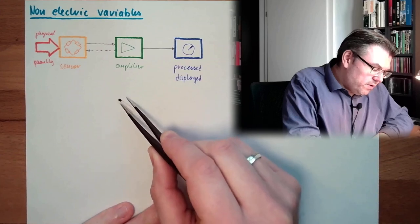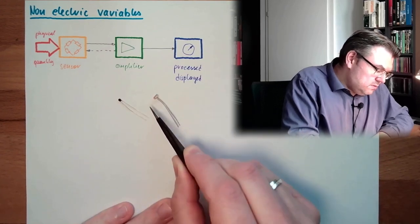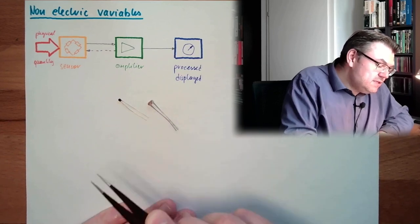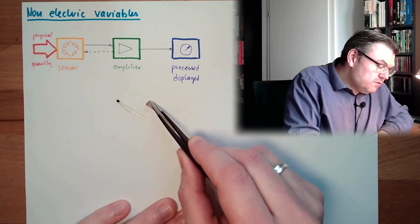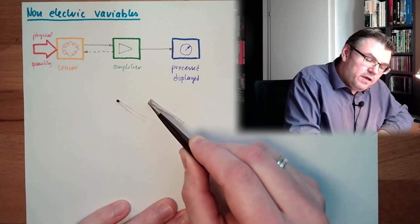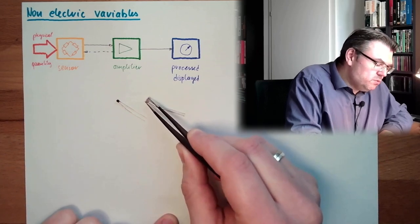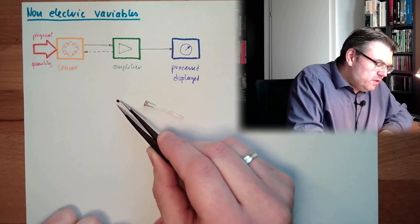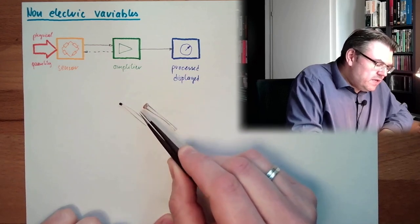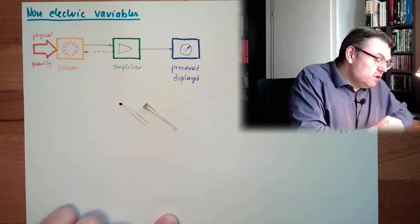Here's another sensor. This one. Looking very similar. Also changing resistance. However, not because of heat, but because of light. So if there is a high illumination, this will have low resistance. If there is low illumination, this will have high resistance. And this will change resistance according to temperature. This is the same working principle. However, measure different physical quantities.